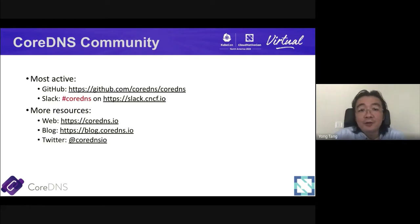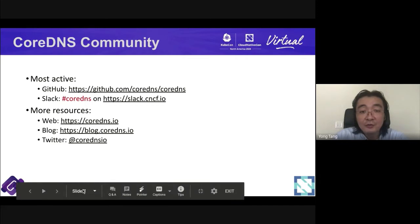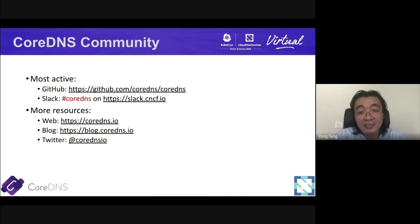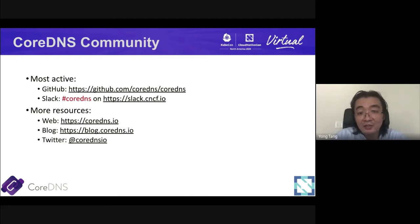Many people ask: how do I get help from the CoreDNS community? There are two main places. First, GitHub — you should be able to find most of the maintainers there, and they are very active every day. There's also a CoreDNS Slack channel on the CNCF Slack. Additionally, you can find help via the website, blogs, and Twitter.